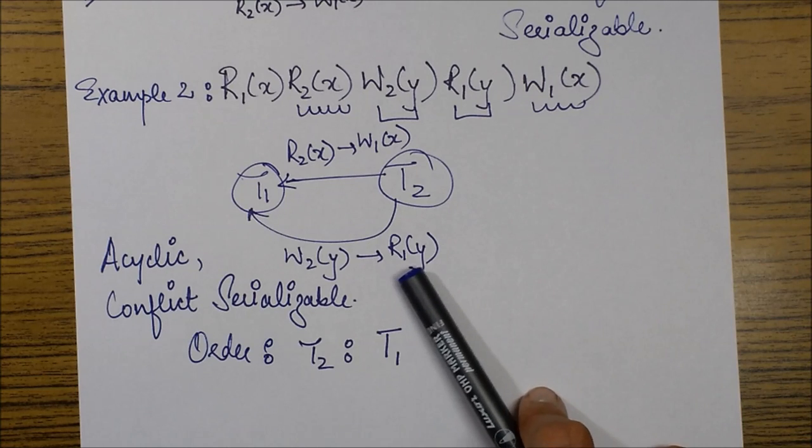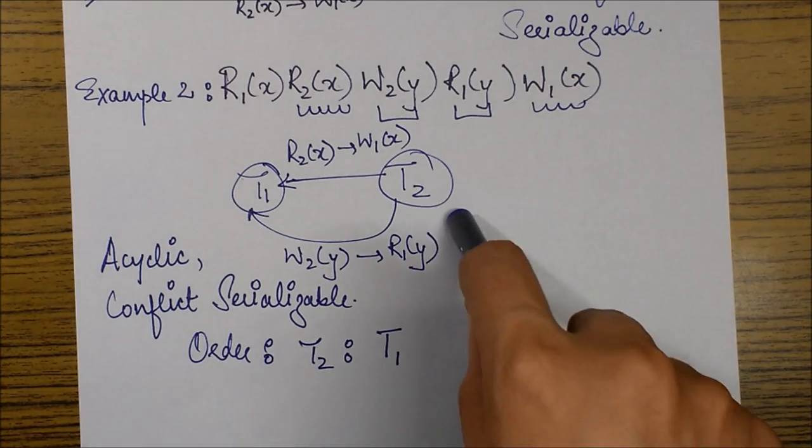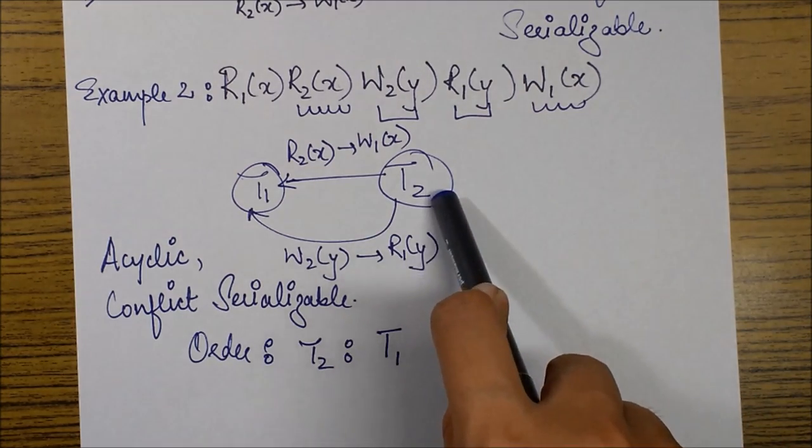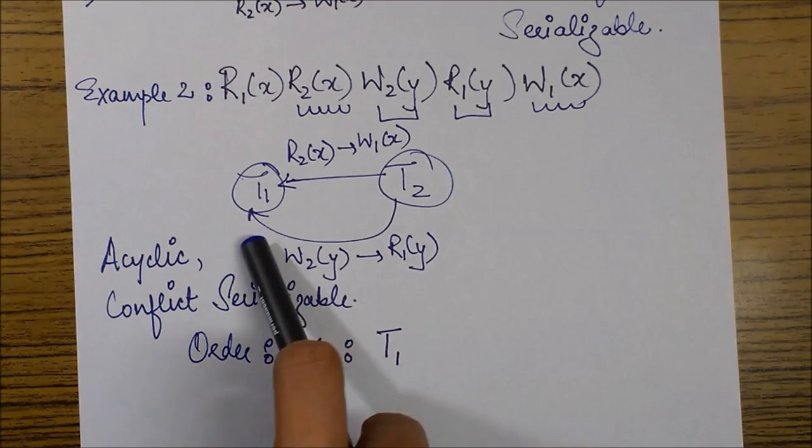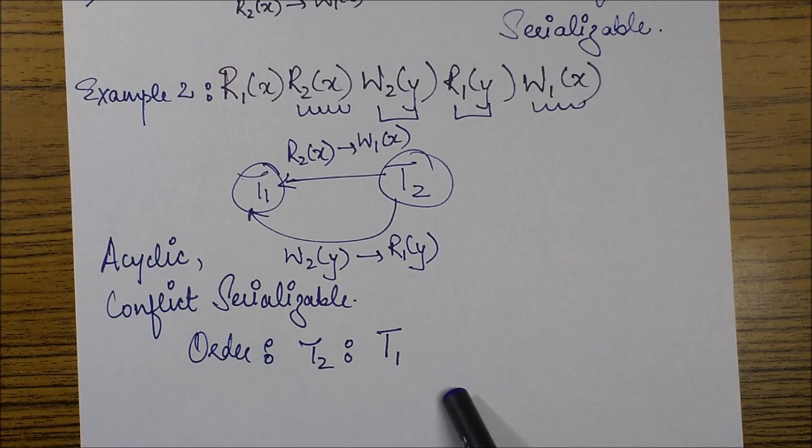Then we follow the procedure to get a serial order. What was that procedure? First of all we will remove the node with an indegree 0 which is T2 in this case. We remove T2 and then the other node left over here is just T1. So the order is from T2 to T1.